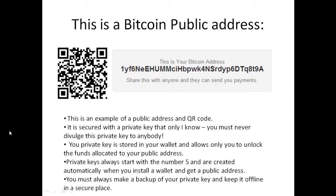Private keys always start with the number five and are created automatically when you install your wallet and get your public address — the private key is linked to the public address. This private key acts as a backup and will allow you to access your public address and Bitcoin funds if anything ever goes wrong with your computer. Bitcoin uses public-private key encryption, and your public address is created using SHA-256 encryption — the same encryption used in online banking with HTTPS.